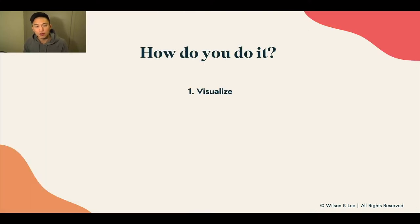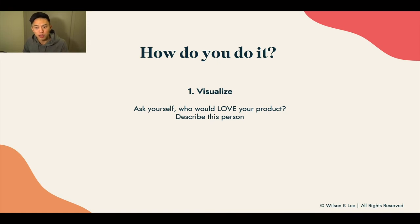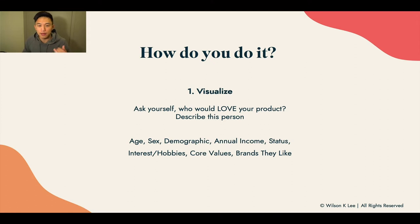Now, how do you do it? There are three steps. The first is to visualize — visualize who would be the ideal person that buys from you, who would believe in and actually enjoy the product you have to sell. Describe this person: describe their age, how old they are.